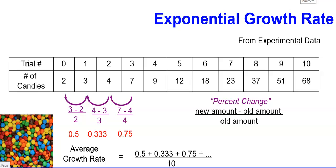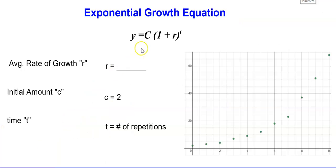That r is the growth rate we just calculated, the average growth rate. C is the initial amount - how much did we start with? We started in trial 0 with two M&Ms. And time is t, which is the number of repetitions.